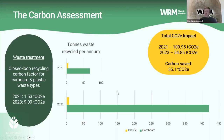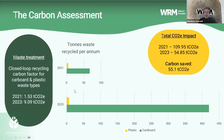The overall carbon saved from the Dolly Lane project currently stands at 55.1 tonnes of CO2 equivalent per year, which is really great. We've submitted for a national award for this project and are awaiting the outcome. Some really positive work is being done by the trust.